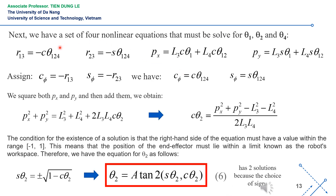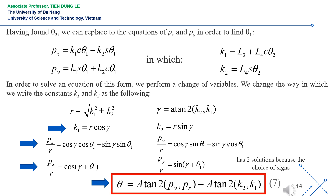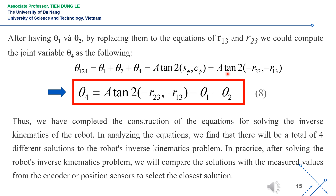Similarly, we can determine the formula for calculating the joint variable theta 2 as shown in equation 6 on this slide. You can pause to read the detailed transformations presented on this slide. We continue to transform to obtain the formula for calculating joint variable theta 1 as shown in equation 7 on this slide. We also note that equation 7 for joint variable theta 1 also has two solutions. Continuing with the calculations, we will derive the formula for calculating joint variable theta 4 as shown in equation 8 on the slide. Thus, we have completed the construction of the equations for solving the inverse kinematics of the robot.